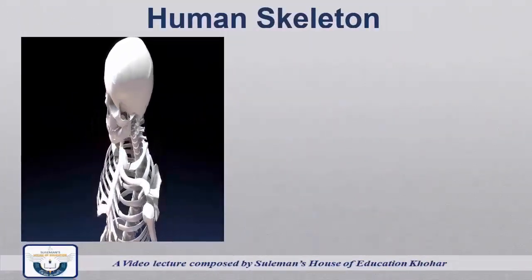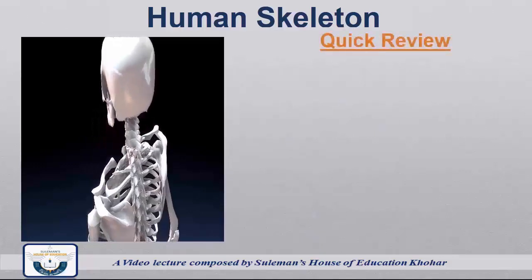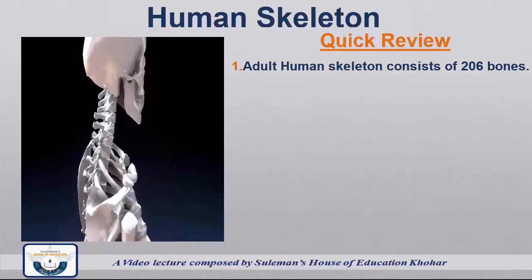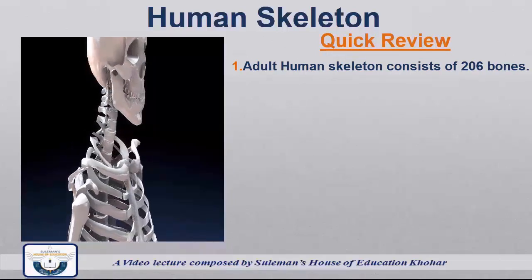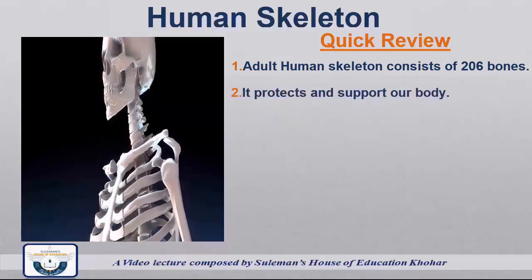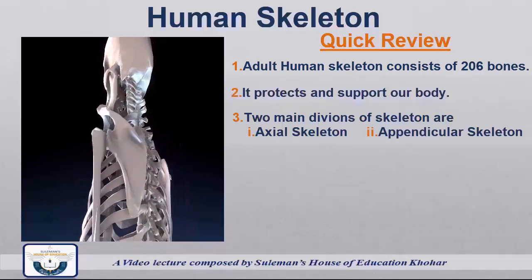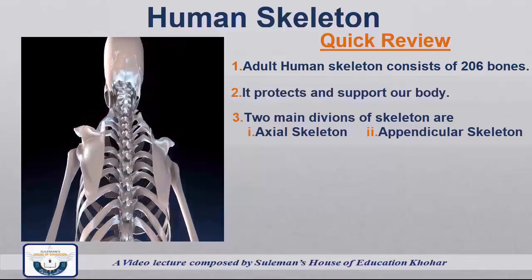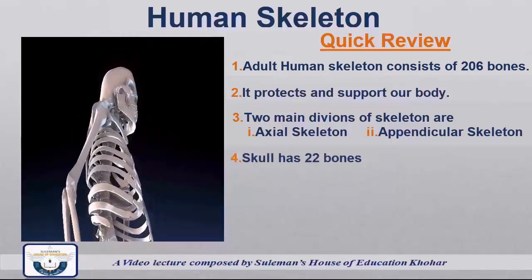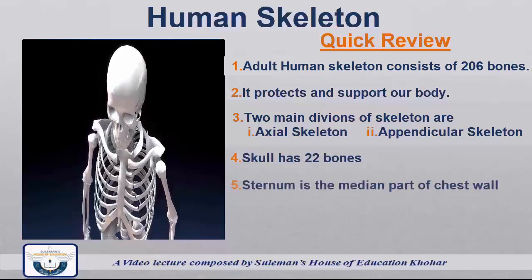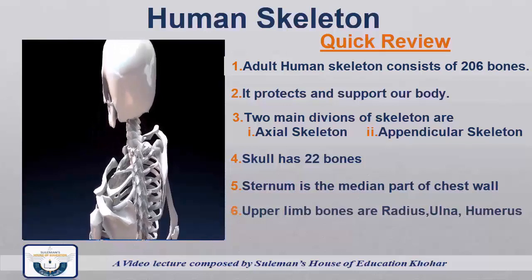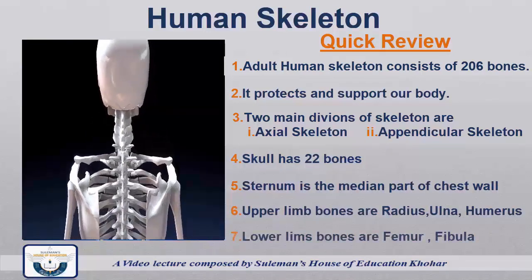We can summarize the discussion of today. Let's have a quick review. Adult human skeleton consists of 206 bones. It protects and supports our body. The two main divisions of the skeleton are axial skeleton and appendicular skeleton. Skull has 22 bones. Sternum is in the median part of the chest wall. Upper limb bones are radius, ulna, and humerus. Lower limb bones are femur and fibula.